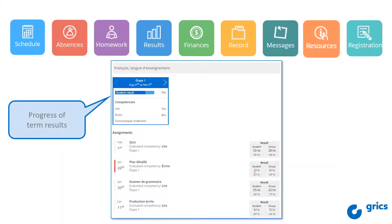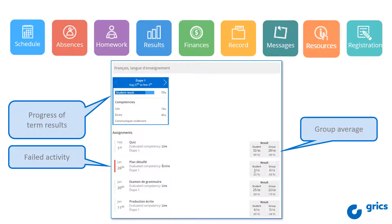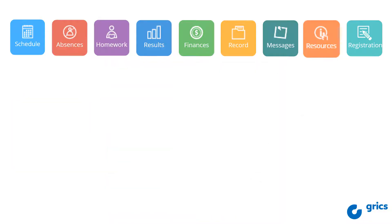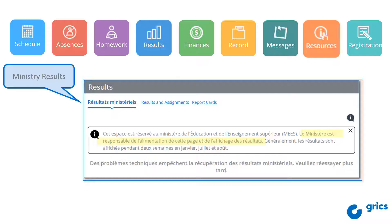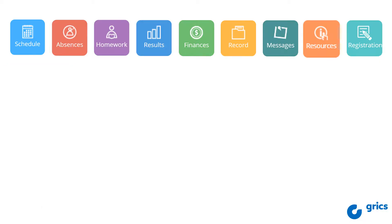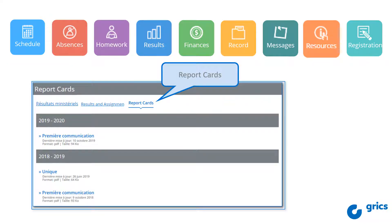A table summarizes your child's progress for the term — these are not the final results. Easily spot failed activities highlighted in red. Group averages will be displayed if they are made available. Ministerial results are made available by the Ministère de l'Éducation de l'Enseignement Supérieur, and are usually available for two weeks in January, July, and August. Here you will find the report cards from the current and previous years in PDF form.